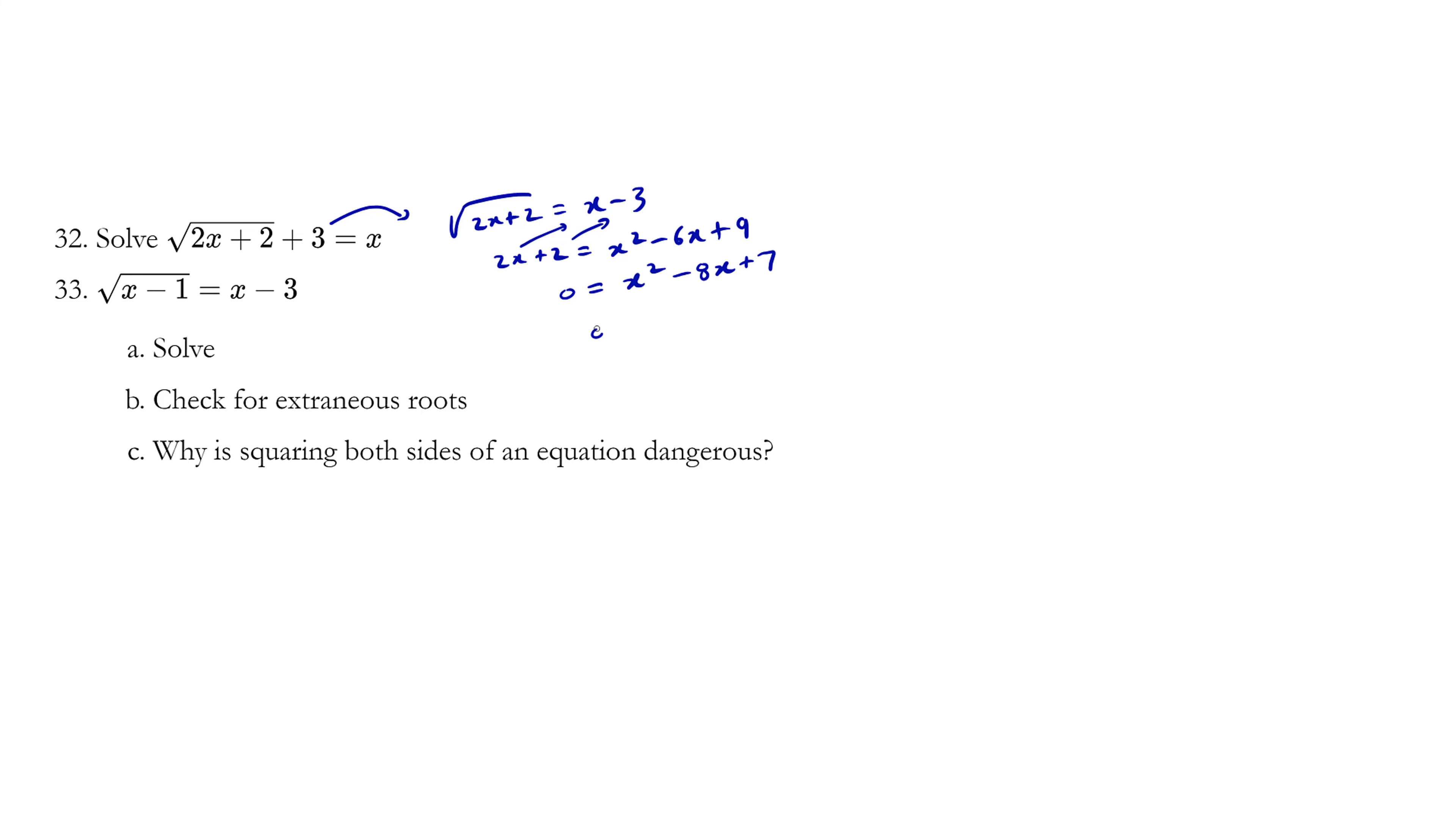And the question is, can you factor this? And the answer is yes. What times what becomes 0? x equals 7 or x equals 1. Now before you assume that both answers are correct, you should substitute it back into the left side and the right side to see if these are correct.